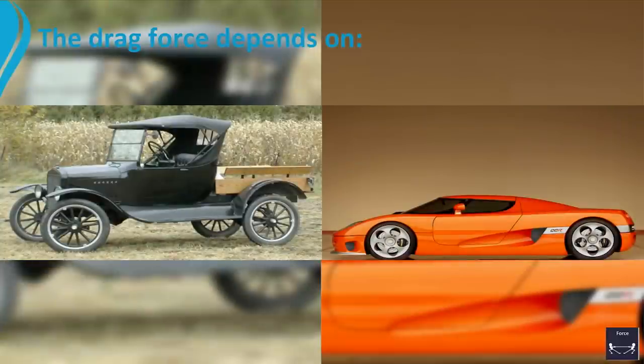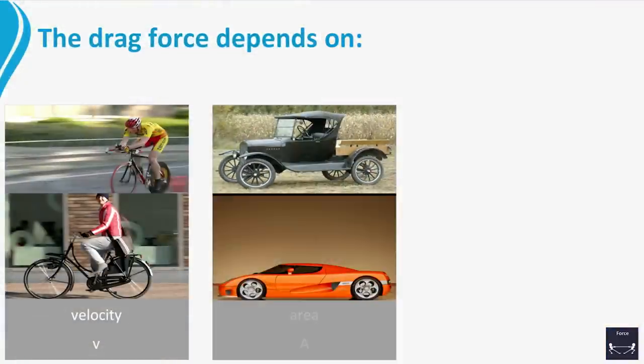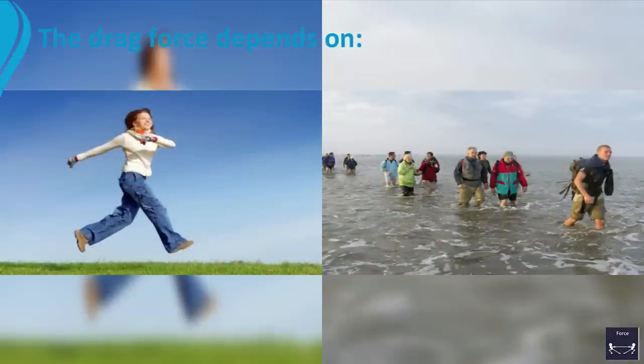The shape of the object is also important. The smaller the frontal area, the less drag. No wonder sports cars are so flat. Finally, the type of fluid matters. It is much easier walking through air than through water.